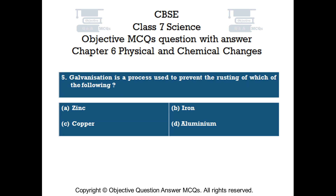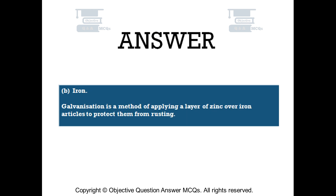Question number 5. Galvanization is a process used to prevent the rusting of which of the following? Option A: Zinc. Option B: Iron. Option C: Copper. Option D: Aluminium. The right answer is Option B: Iron. Galvanization is a method of applying a layer of zinc over iron articles to protect them from rusting.